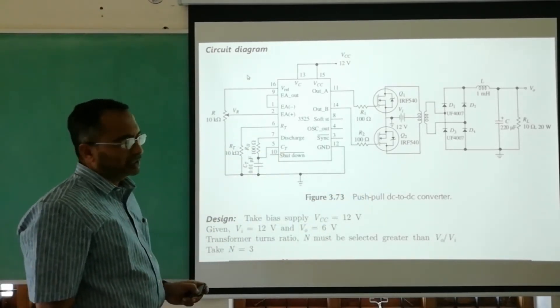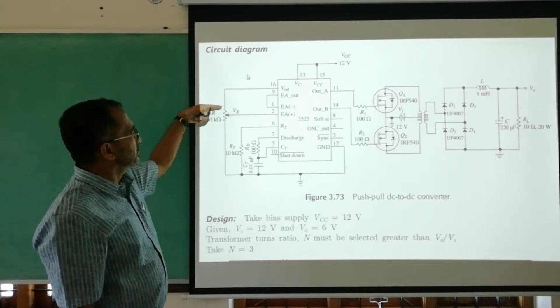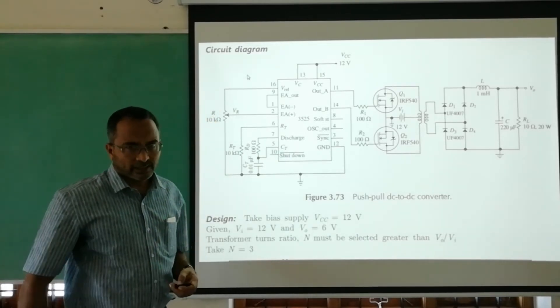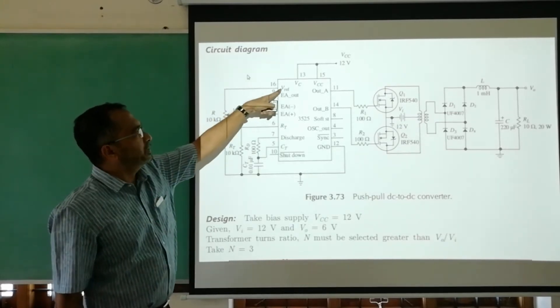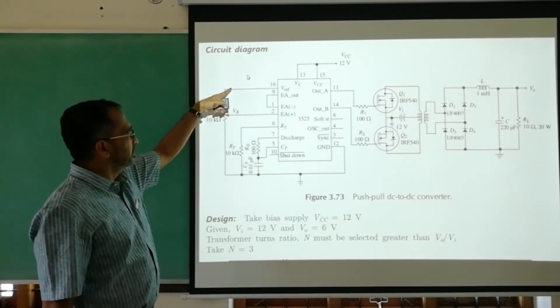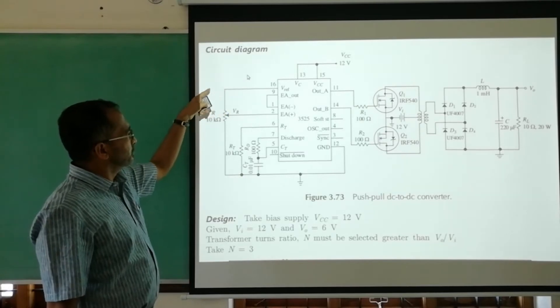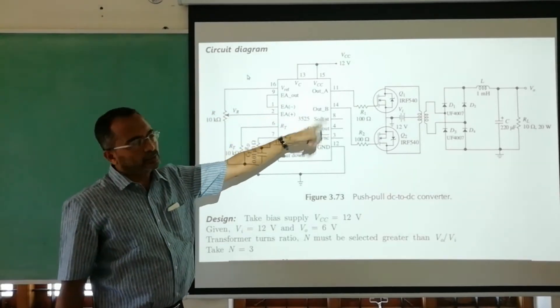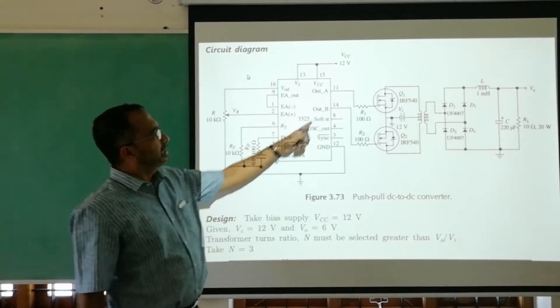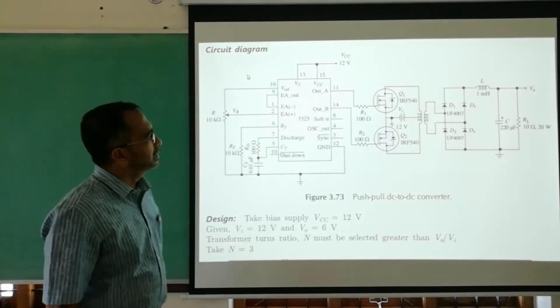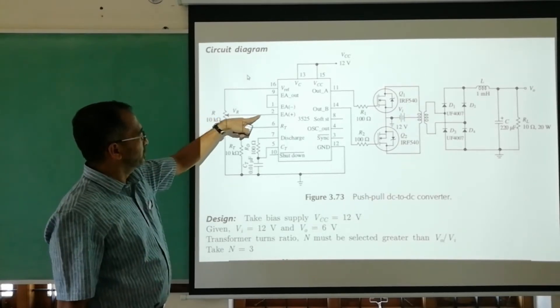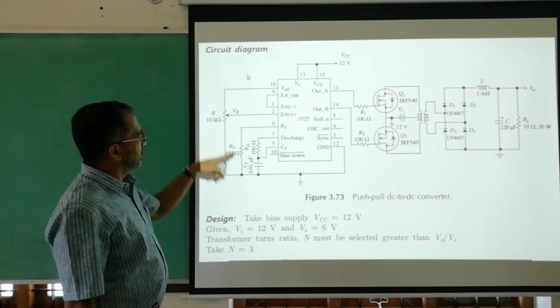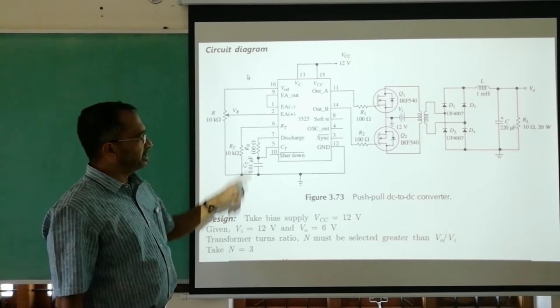The design of this part uses a 10k potentiometer wire wound so that the 5.1 volts generated by the IC at pin 16 is used to vary the duty cycle available at pins 11 and 14. This voltage available is from 0 to 5.1 volts.